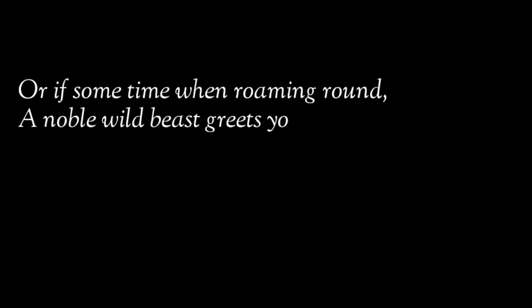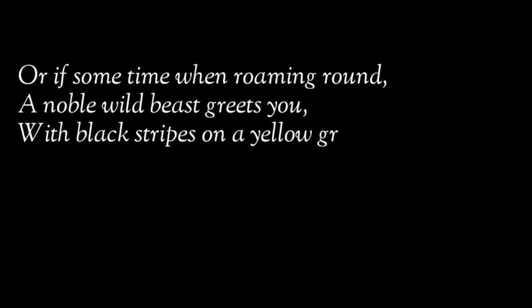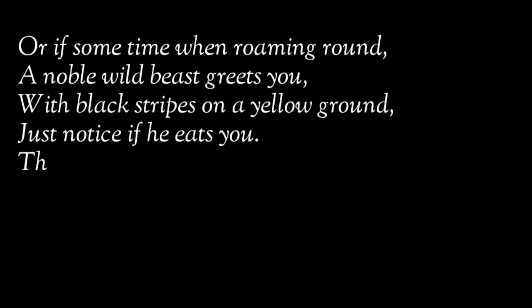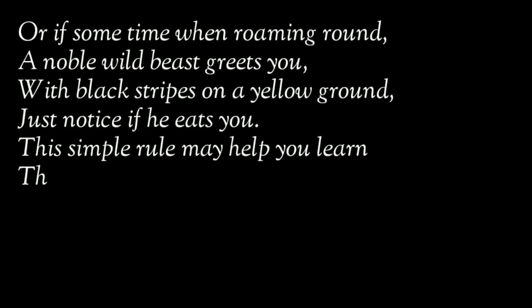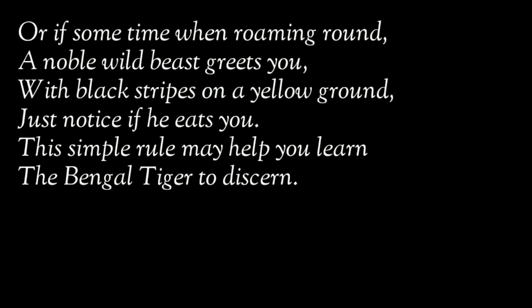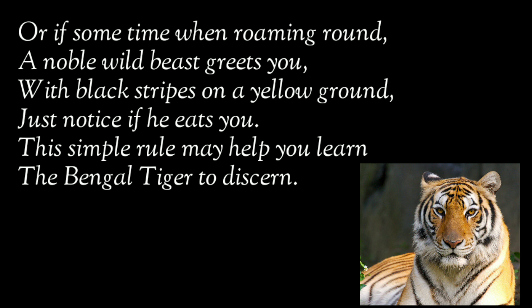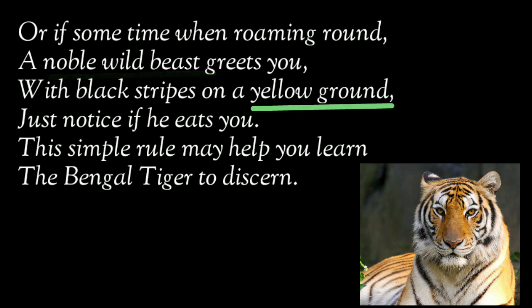Moving on to stanza 2: 'Or if sometime when roaming around, a noble wild beast greets you with black stripes on a yellow ground, just notice if he eats you. This simple rule may help you learn the Bengal tiger to discern.' In this stanza, the poet Caroline Wells reveals how one can identify a Bengal tiger because of its peculiar physical features and behavior. The poet describes it as a noble, majestic animal with distinctive yellow skin and black stripes.